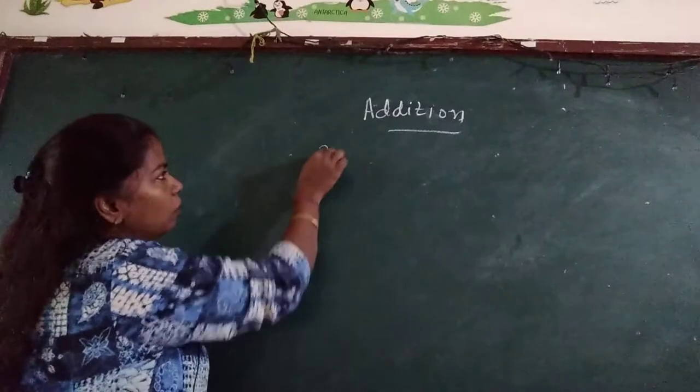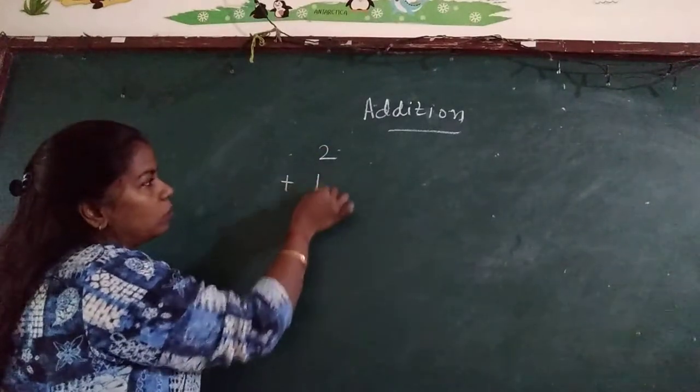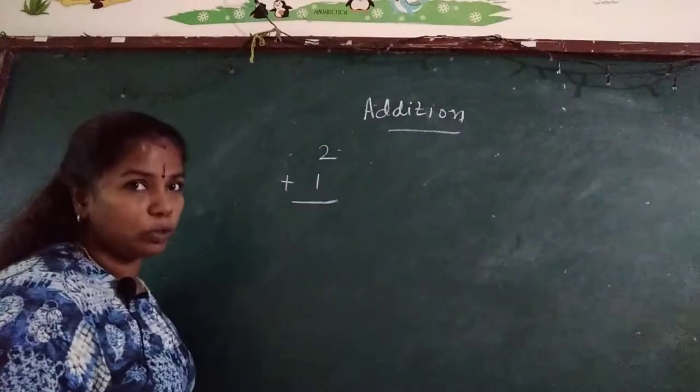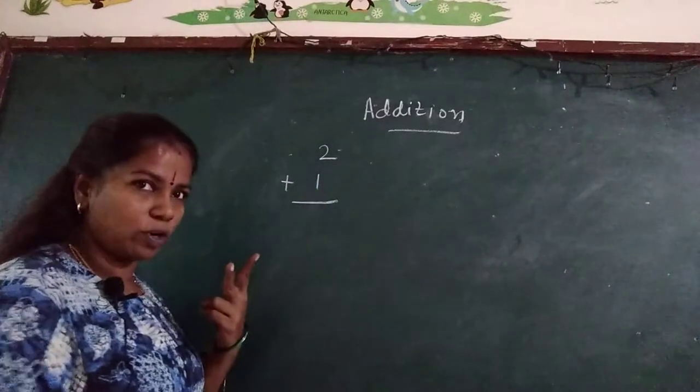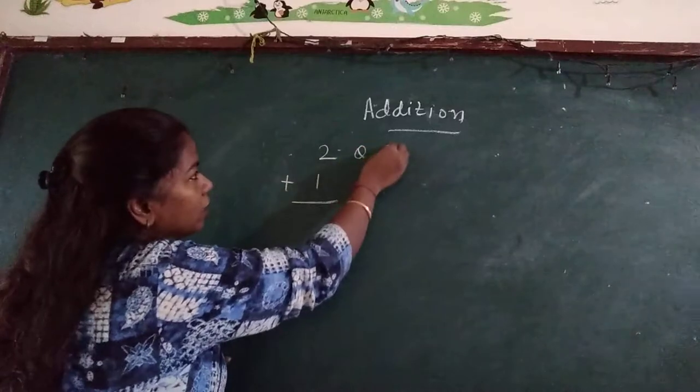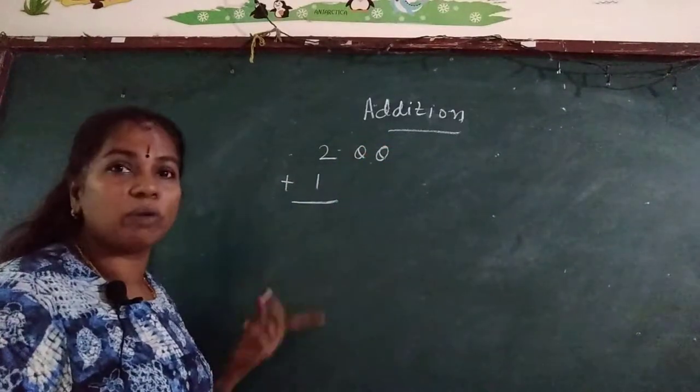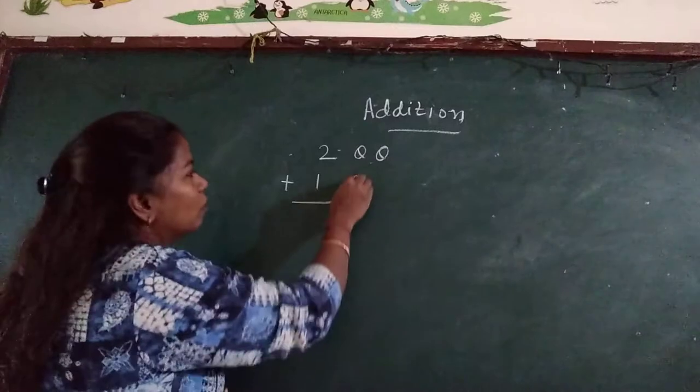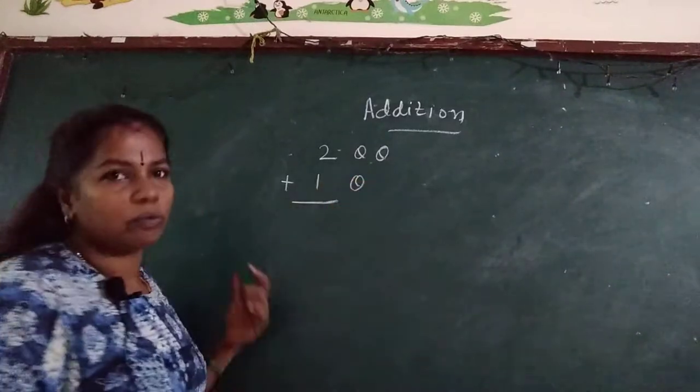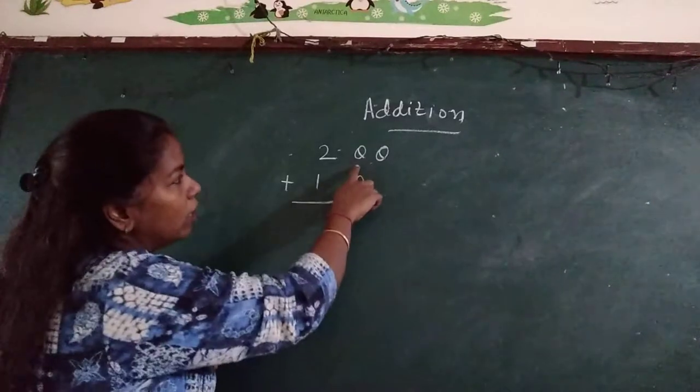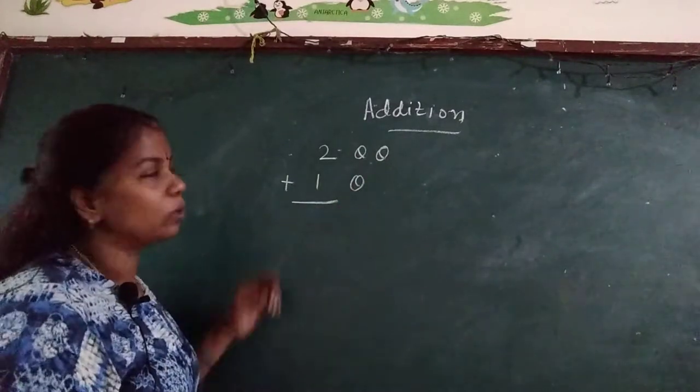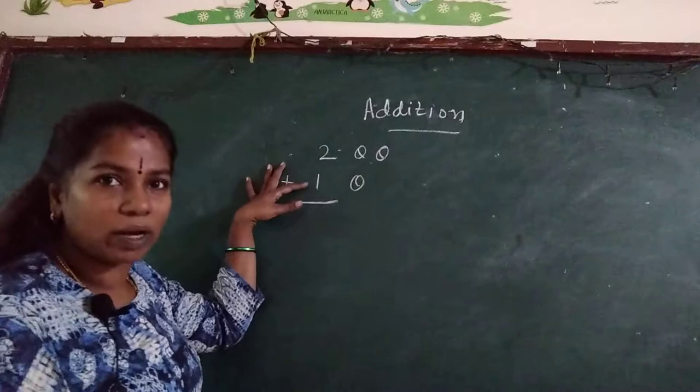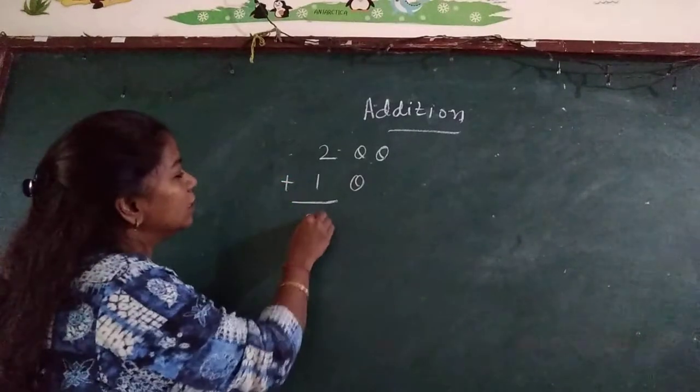Addition. Now 2 plus 1. How will you do 2 plus 1? For 2, I will make 2 balls: 1, 2. For 1, how many balls will I make? 1. Now shall we count? 1, 2, 3. So 2 plus 1 is equal to 3.